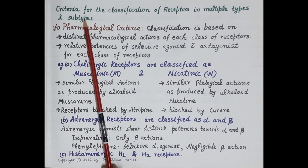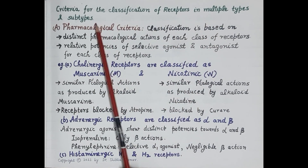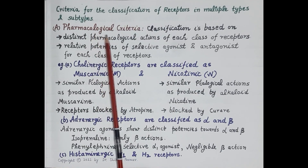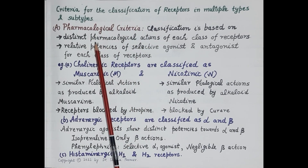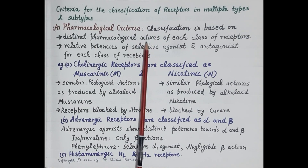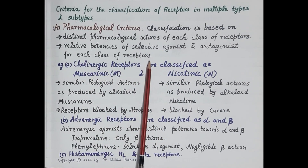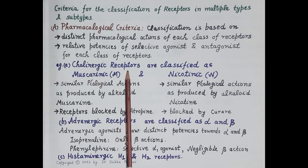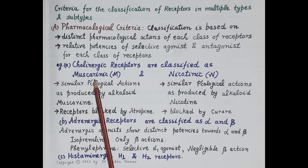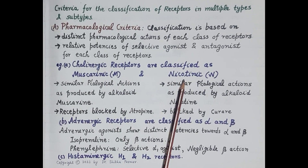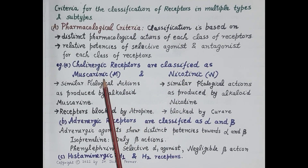Receptors exist in multiple types and subtypes. The first criterion for their classification is the pharmacological criterion. Each class of receptors exhibits distinct pharmacological actions, and relative potencies are shown by selective agonists and antagonists for each class. For example, cholinergic receptors are classified as muscarinic receptors and nicotinic receptors.